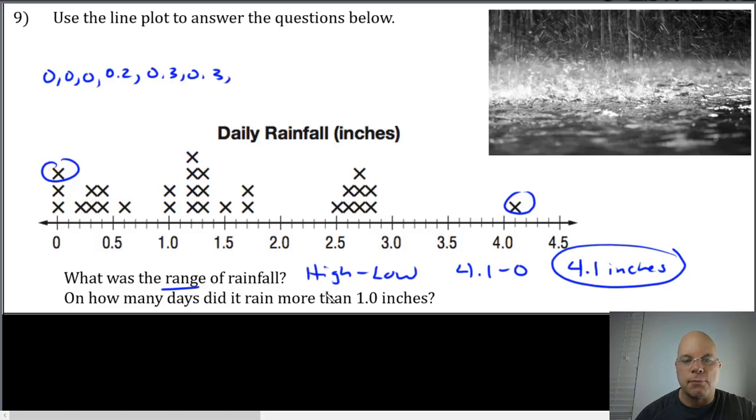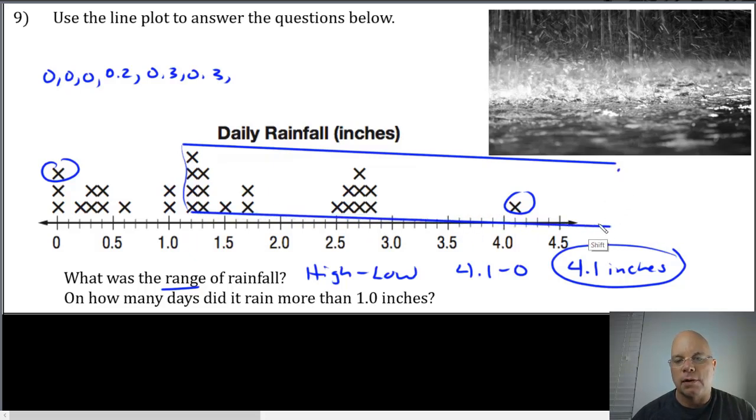On how many days did it rain more than one inch? It rained exactly one inch on these two days, but these would not be included. The rainfall greater than one inch would be everything after that. If we count those x's, four and three is seven, and three more is ten.